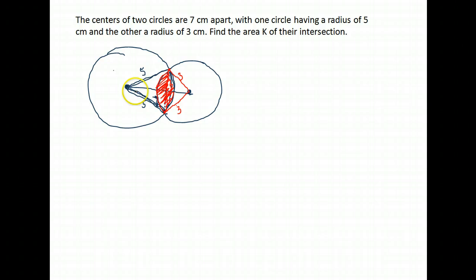In order to do that I have to know the measure of the angle here to find the area of this segment, and I need the measure of this angle here to find the area of this segment. Now in order to do that we're going to make good use of this triangle that we formed. So I know I have a five, a three, and then the distance between their centers, a length of seven.